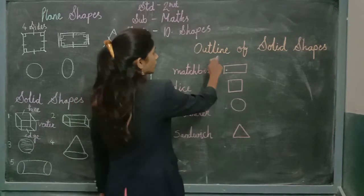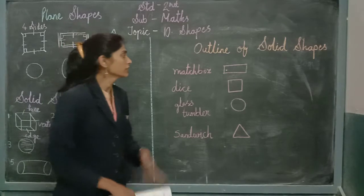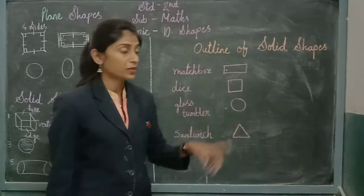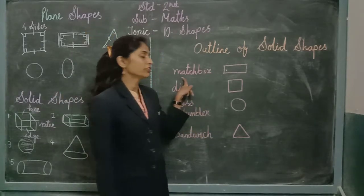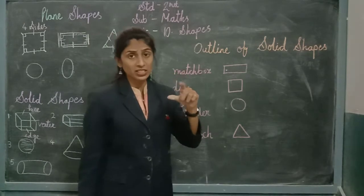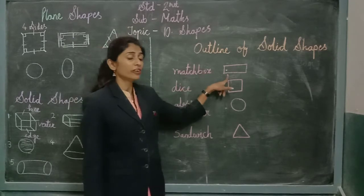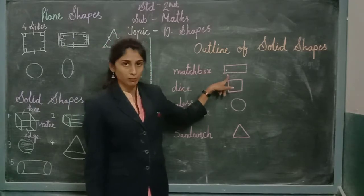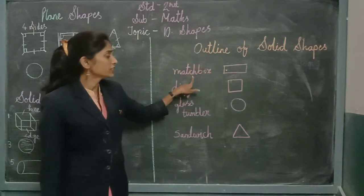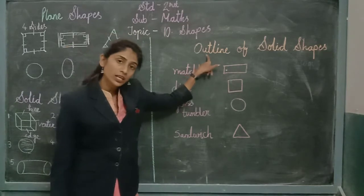Now let us see the outline of solid shapes. What is the meaning of outline of solid shapes? When we see any object, that object has a particular shape. For example, a matchbox — you all know a matchbox. That matchbox object is very similar to a rectangle shape, and that rectangle shape we call the outline. The object is your solid shape, and that shape is the outline of that object.